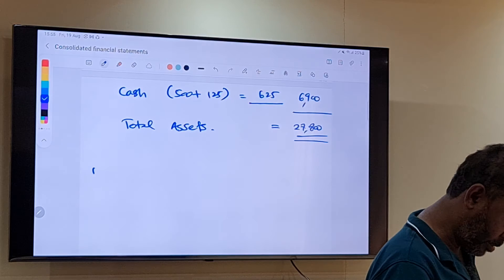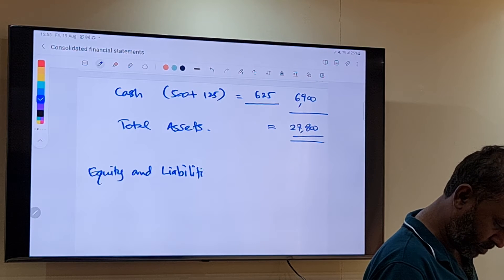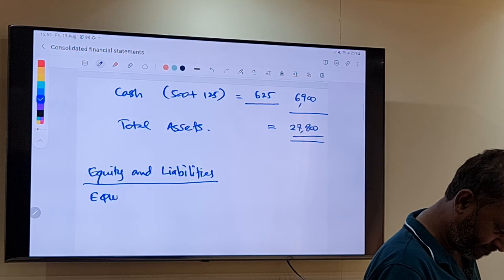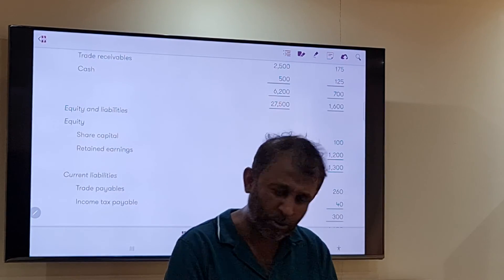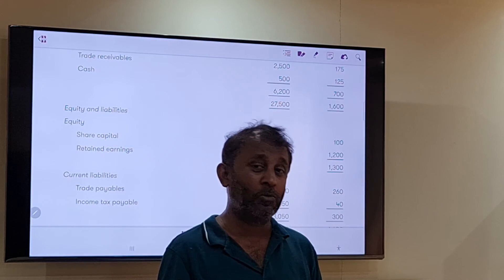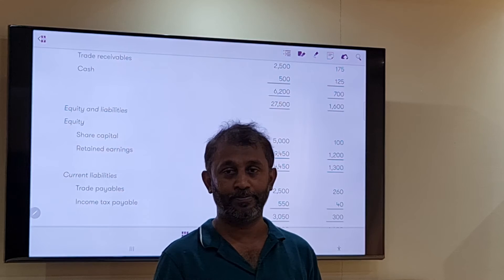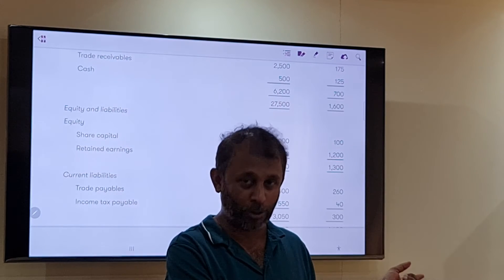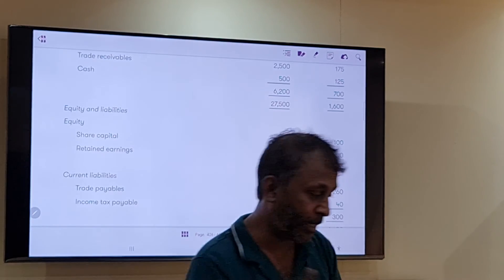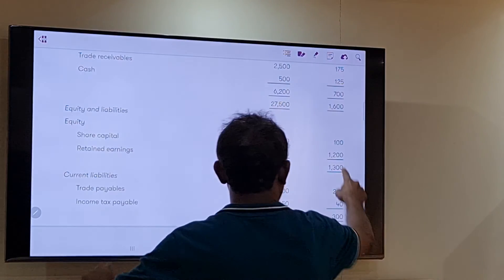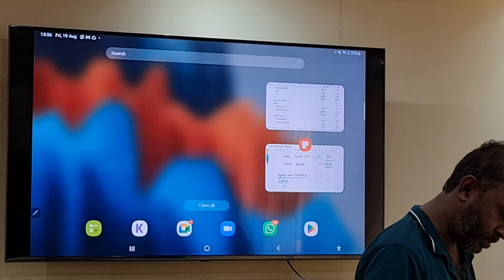Now what is the next step? Equity. Share capital, retained earnings. Please remember, even if you don't understand consolidation at all, at least you can get two marks. How? Share capital in the balance sheet, always only the parent company. Subsidiary company share capital is not taken. I will show you the logic, but I'm just telling you this. The balance sheet share capital, you should only take the parent company share capital. How much? 5,000.